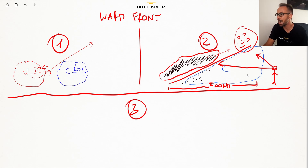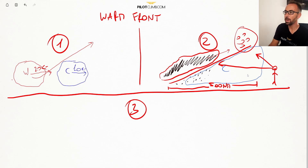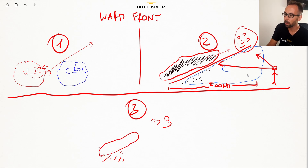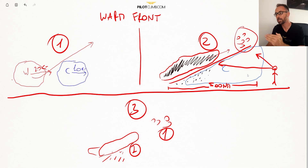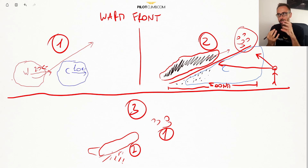The warm front can be as long as 500 nautical miles, depending on the atmospheric situation. What you'll experience is: first you see cirrus clouds, then you get precipitation from mid-level clouds, followed by generally good weather. The cloud slope is shallow, not vertical. So if you have this kind of cloud configuration with cirrus ahead, mid-level clouds with rain, you can expect a warm front is coming.